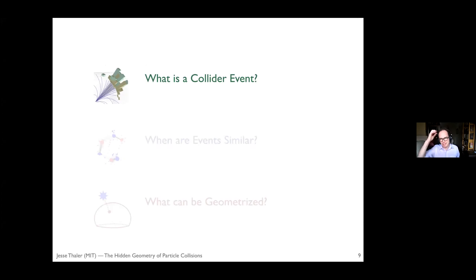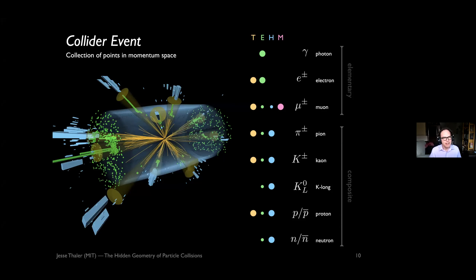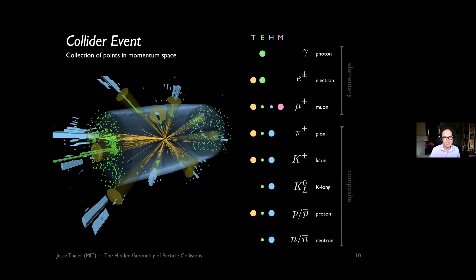So let's start with: what is a collider event? At colliders like the Large Hadron Collider, we get collisions happening roughly every 25 nanoseconds, giving rise to sprays of particles we need to reconstruct. From a data science perspective, a collider event is simply a collection of points in momentum space. Ignoring displaced vertices, all the particles start from the origin and go out with their momentum in the PX, PY, and PZ directions, possibly carrying energy or mass information. We want to take advantage of this data structure and ask what data analysis techniques are available.